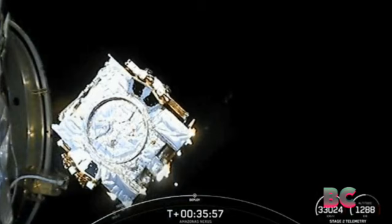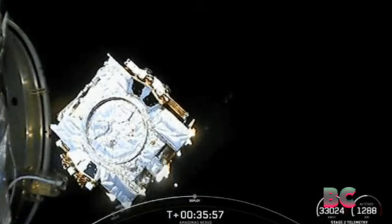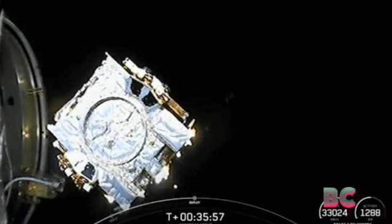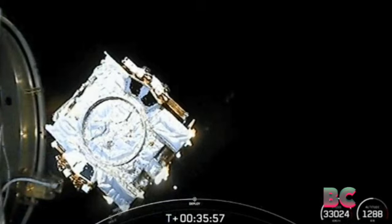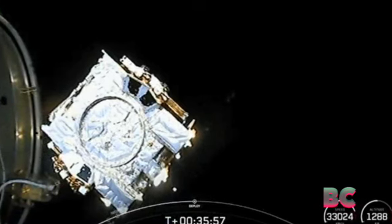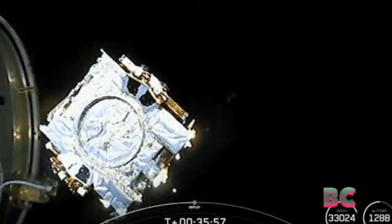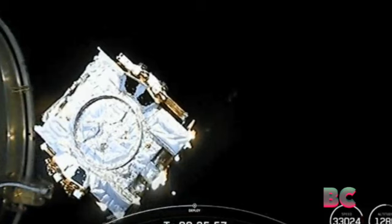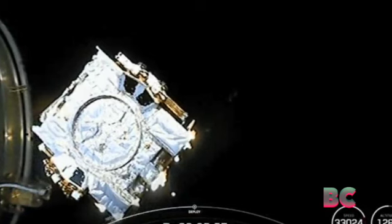SpaceX Falcon 9 delivered a five-ton communications satellite into orbit. A Falcon 9 lit up the Florida skies Monday evening in what is now a very familiar scene. The rocket successfully deployed a Nexus communication satellite into a trajectory that will take it to geostationary orbit, from where it will expand the Spanish company's coverage across the Americas, the Atlantic Ocean, and Greenland.